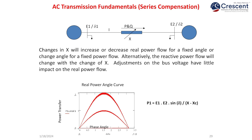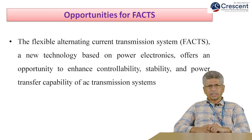In series compensation, there is an increase in the stability limit. The power flow equation P = E1E2 sin(δ)/X is altered when capacitive reactance XC is used in the line: P = E1E2 sin(δ)/(X − XC).